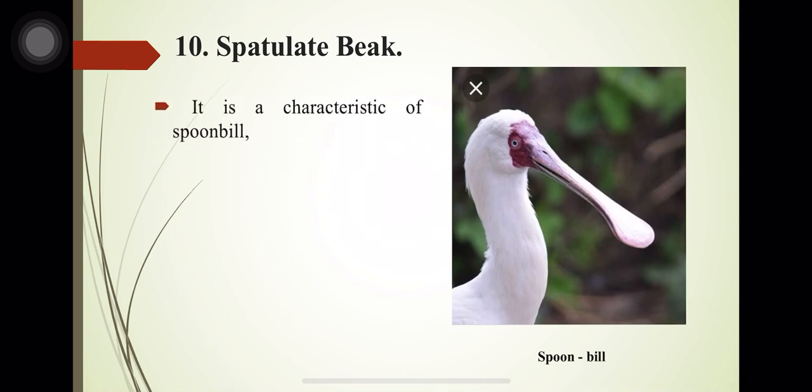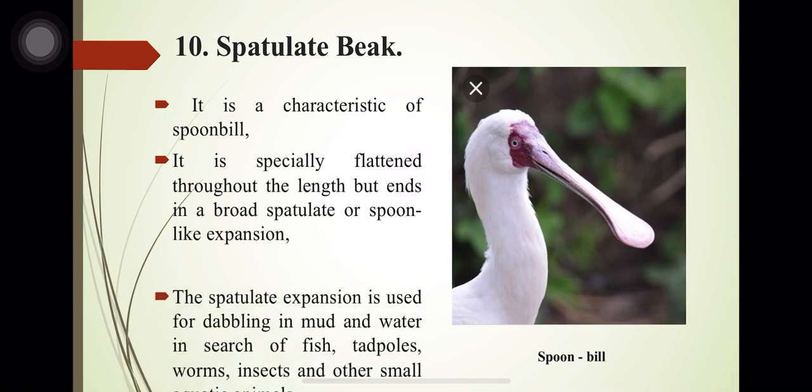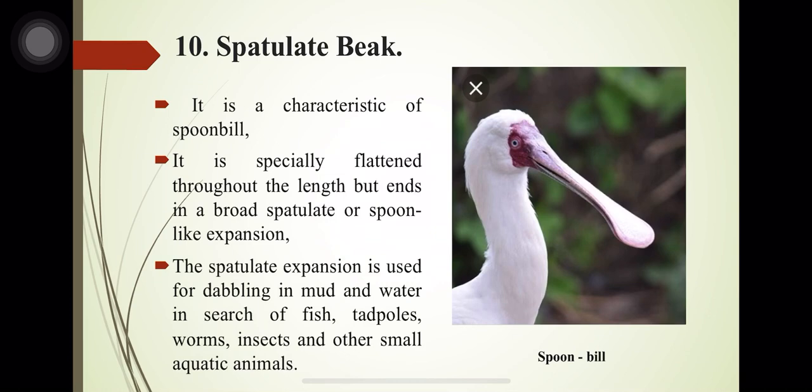The spatulate beak, characteristic of spoonbills, is specially flattened throughout its length into a broad spatulate or spoon-like expansion. It is used for dabbling in mud and water in search of fish, tadpoles, worms, insects and other aquatic animals.